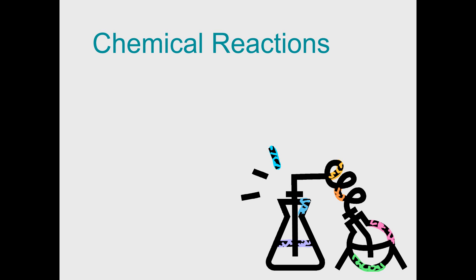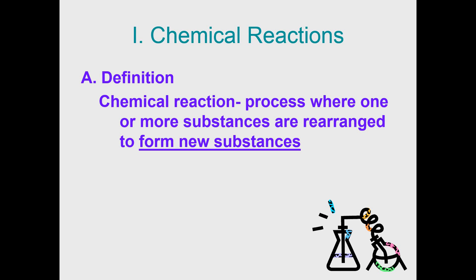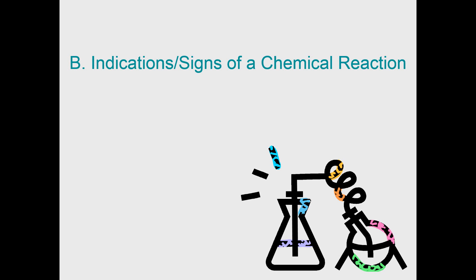Welcome to video one of the chemical reactions unit. We've seen chemical reactions both on paper and in the lab setting, but now we're going to formally learn how to write them out as chemical equations. A chemical reaction is a process where one or more substances are rearranged to form new substances.